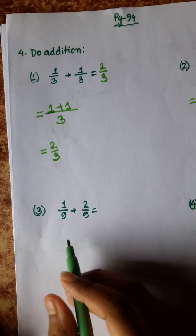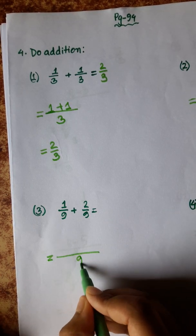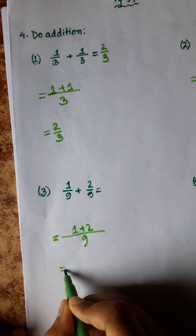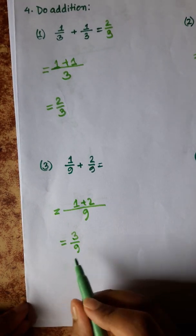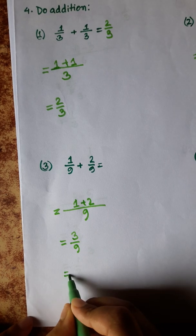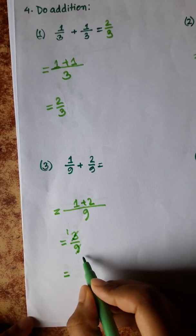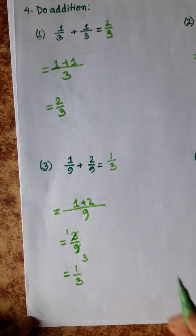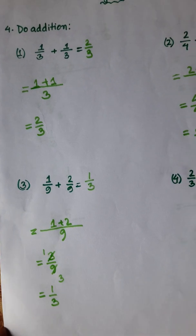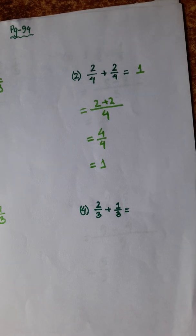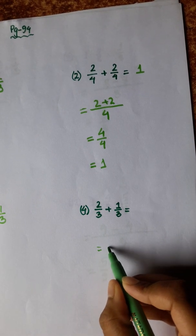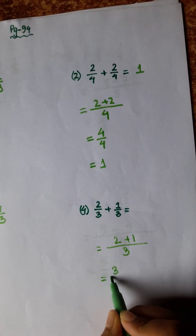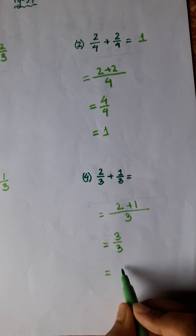Number 3: denominator is the same, 9. So on top — numerator — 1 plus 2 is 3 by 9. Simplifying, 3 by 9 gives 1 by 3. Answer is 1 by 3. Next, number 4: 2 plus 1 is 3 by 3, and 3 by 3 cancels to give 1.